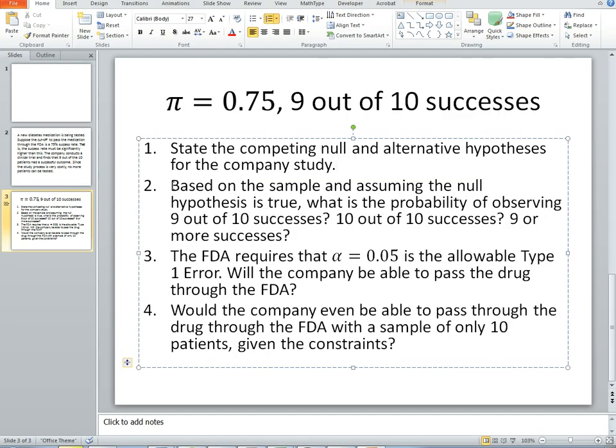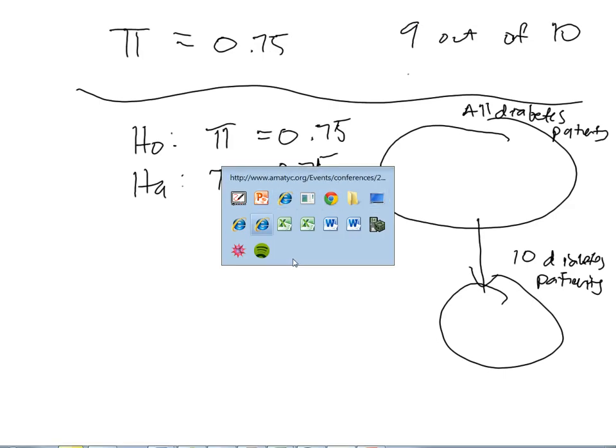Okay, so back to the problem. So based on the sample and assuming the null hypothesis is true, what is the probability of observing 9 out of 10 successes or 10 out of 10 successes? What about 9 or more successes? Well, there are two ways we can address this.